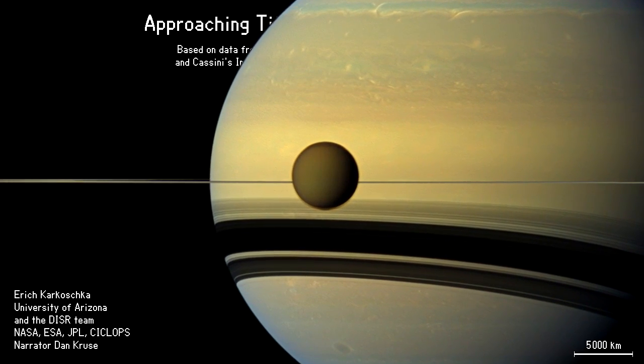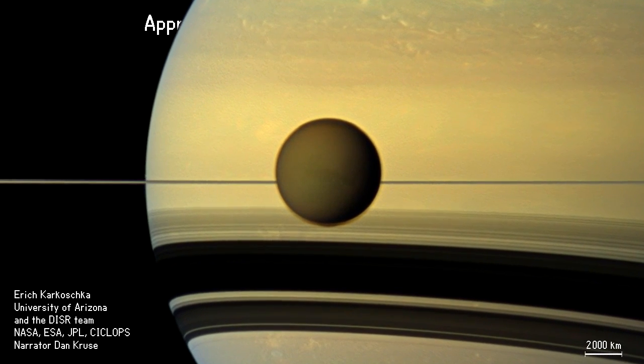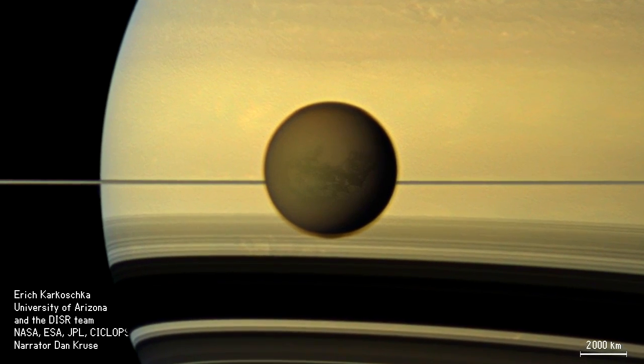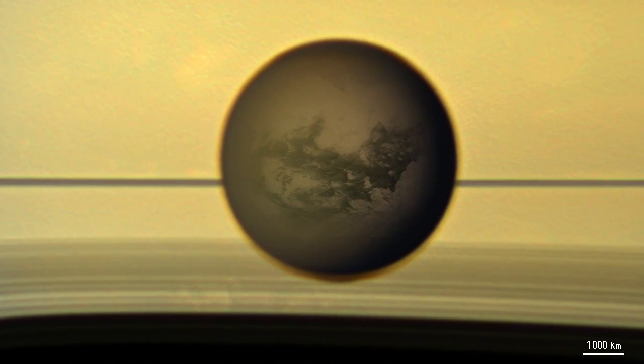Saturn's atmosphere shows a banded structure and a number of storms. We view the edge of Saturn's gigantic ring system. The rings cast major shadows onto Saturn's southern hemisphere. Titan is surrounded by a partially transparent brown haze.